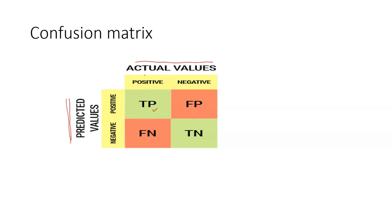If the actual value is positive and your classification model predicted it as positive, we call it a true positive. If the actual value is negative but your model predicted it as positive, we call it a false positive. If your model predicted negative but the actual value is positive, we call it a false negative. And if the actual value is negative and the model predicted negative, we call it a true negative.